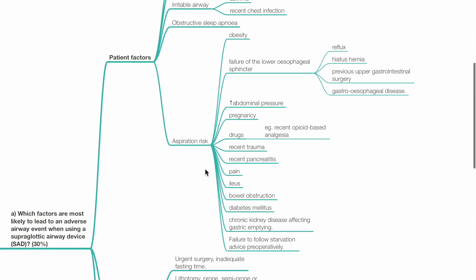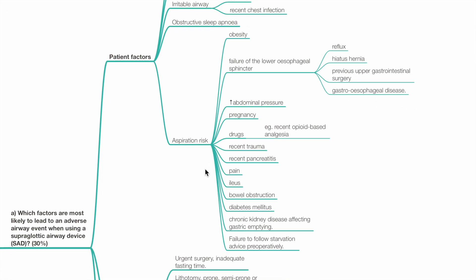Obstructive sleep apnea, and risk factors for aspiration which includes obesity, failure of the lower esophageal sphincter due to reflux, hiatal hernia, previous upper GI surgery and gastroesophageal disease, increased abdominal pressure.